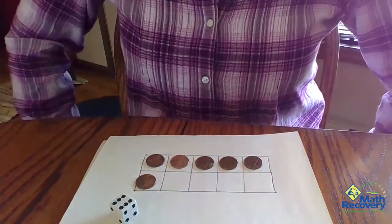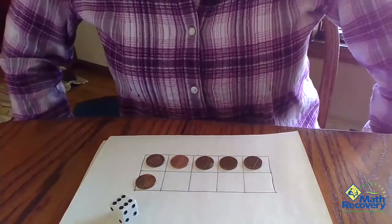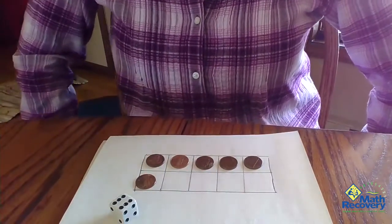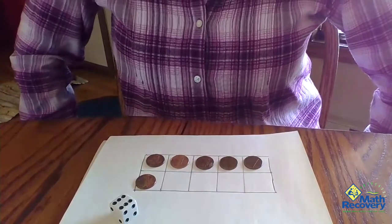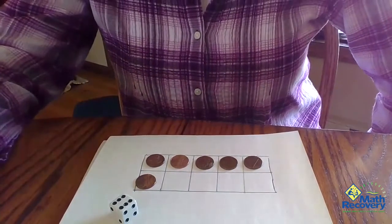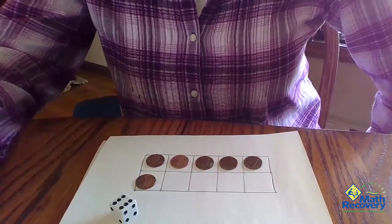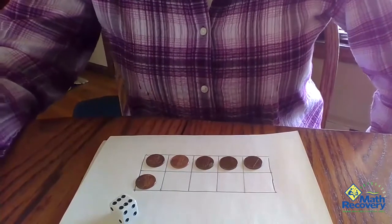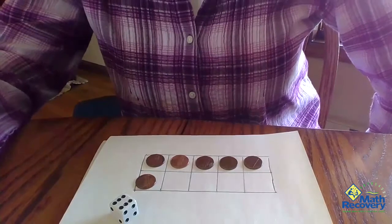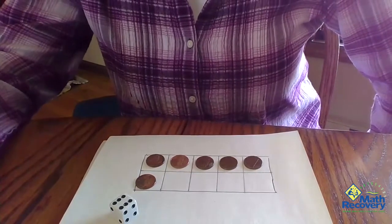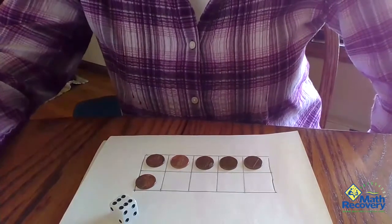And so they would say, okay, I have six in my ten frame, I need four more to make ten. You would be playing against them. You would also have a ten frame and you would be doing the same thing. The object of this game would be the first one to get their ten frame completely filled.